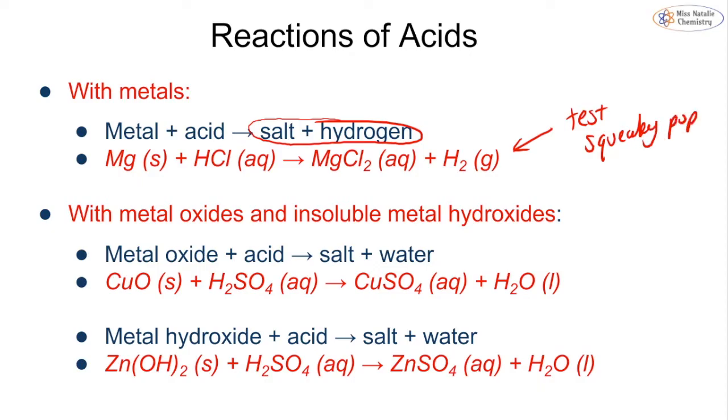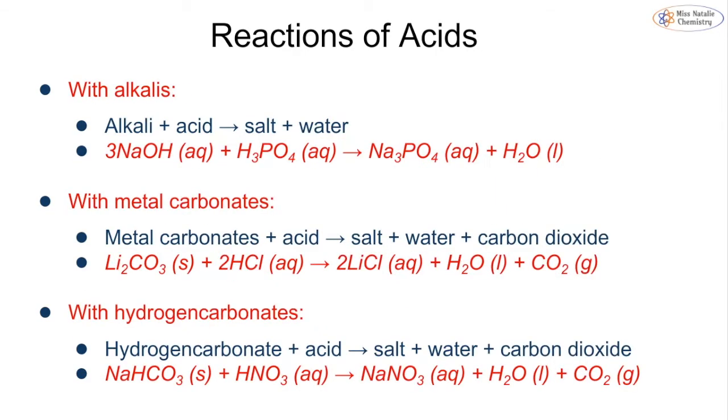If we react it with metal oxides or metal and soluble metal hydroxides, we form a salt plus water. Examples include copper reacting with sulfuric acid to make copper sulfate, or zinc hydroxide reacting with sulfuric acid to make zinc sulfate. Notice we have state symbols here. These are both solids because they are insoluble.